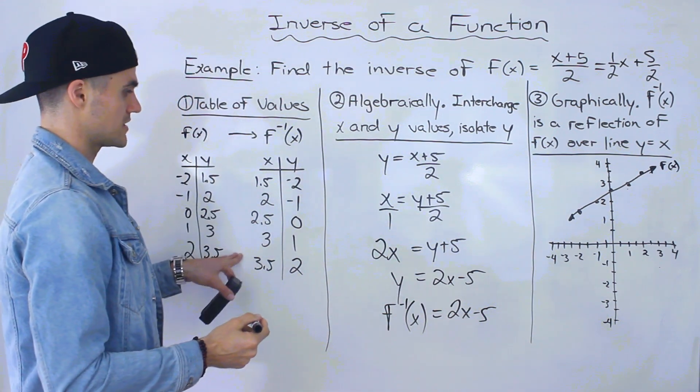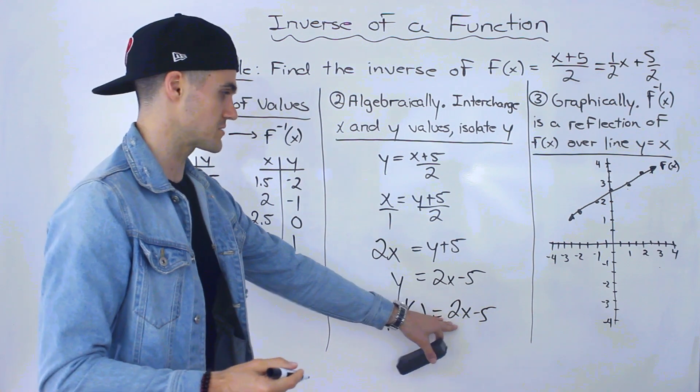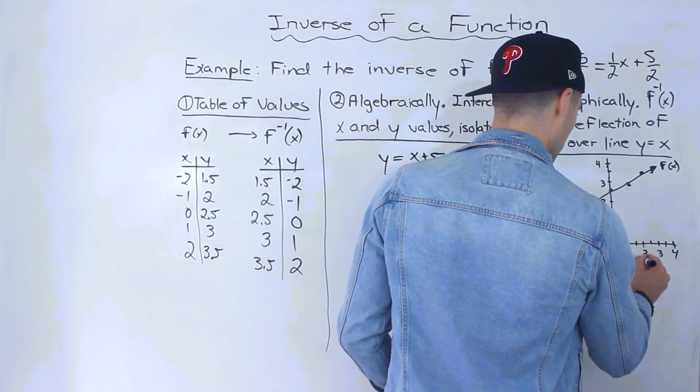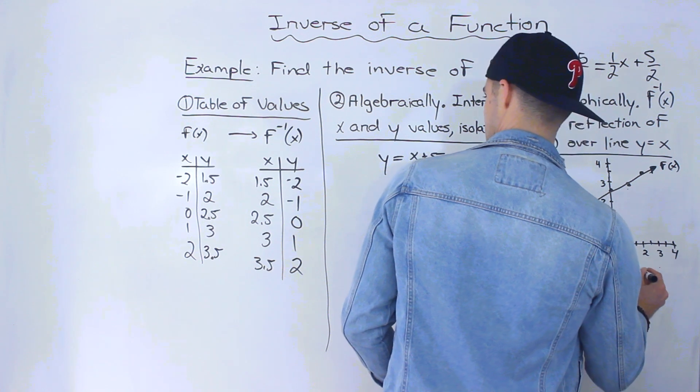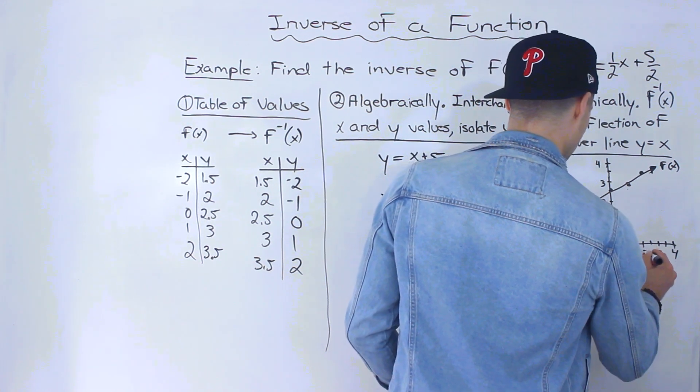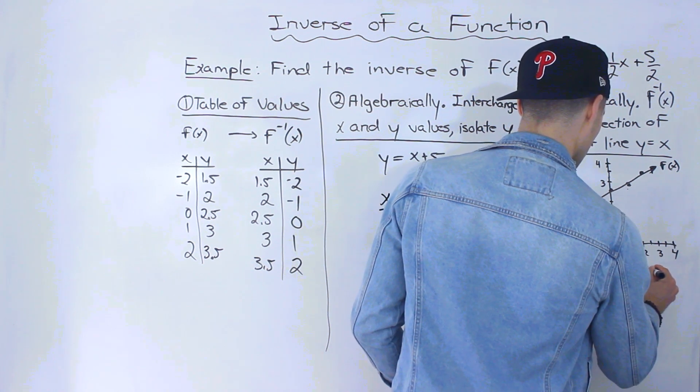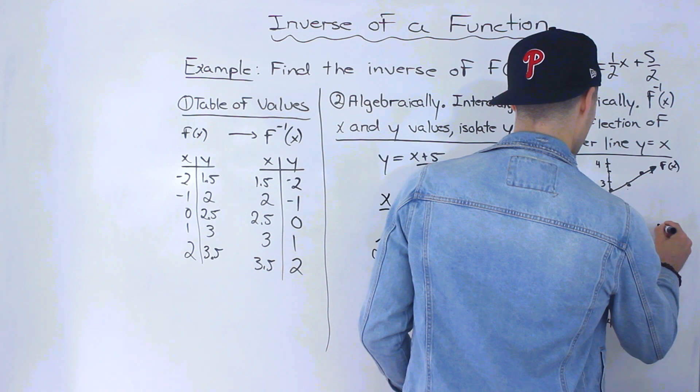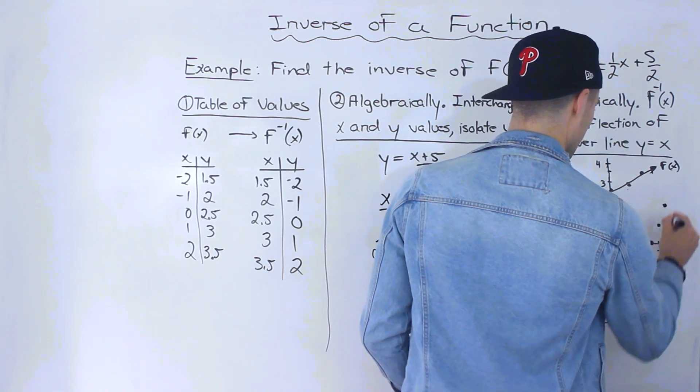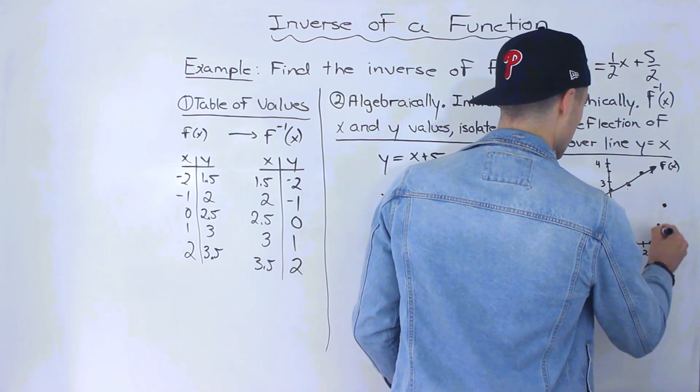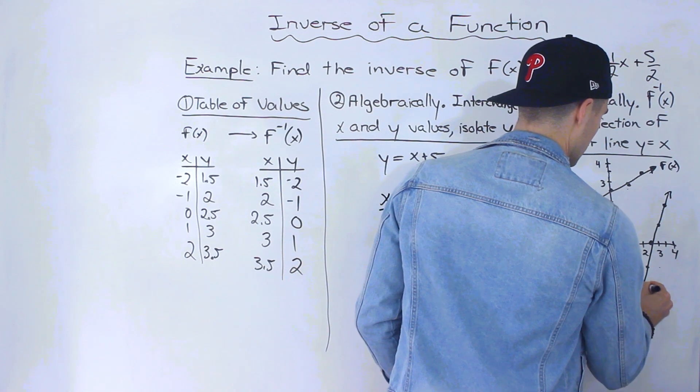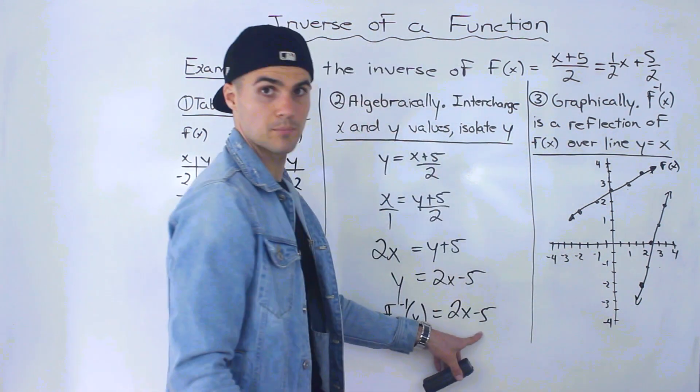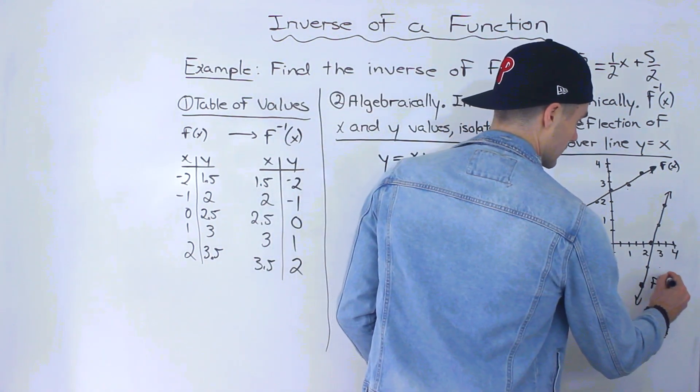And then if we graph the inverse, we plot these points. Now these points correspond to this function, this line, 2x minus 5. So we got 1.5 and negative 2, that's down here. Then we got 2 and negative 1, which would be over here. 2.5 and 0, 3 and 1, and then 3.5 and 2. So this here is another line. Perhaps not the best drawing there, but that is the line 2x minus 5. So if this kept going, it would go through that y-intercept, that b value of negative 5. So this here is the inverse.